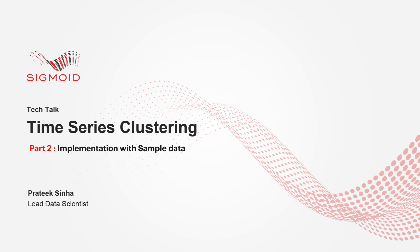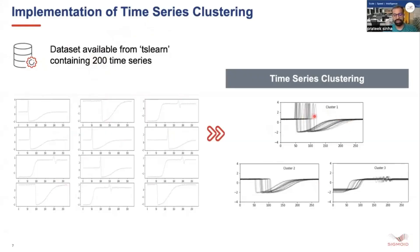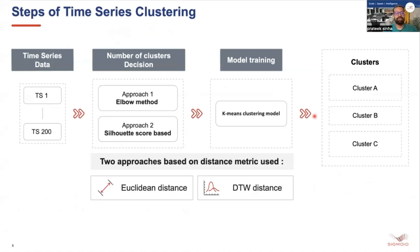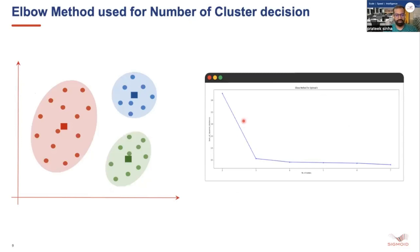I'm going to discuss the implementation of time series clustering. I have taken a sample data set containing 200 time series, and our goal is to cluster them into three clusters. The steps are: first, decide the number of clusters using the elbow method and silhouette score method; then train a K-means clustering model; and finally obtain the clusters. This pipeline can be done using either Euclidean distance or DTW distance.